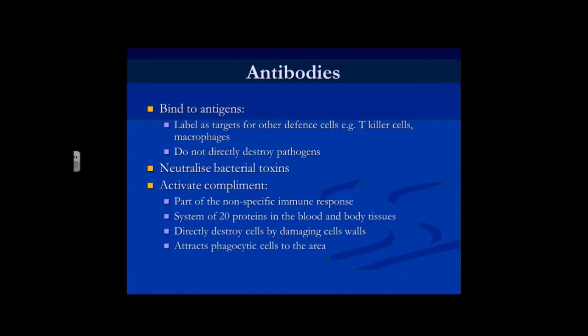Antibodies are not cells themselves — they are little protein packages produced by the B plasma cells. What they do is bind to the antigens to label them for other defence cells to deal with. It's like sticking a big flashing light on the antigen, making it really easy for the T killer cells and macrophages to know they need to get rid of it. The invader already has an antigen on it like a tiny little flag, and the antibodies bind to that antigen and make it really obvious that this is a problem.